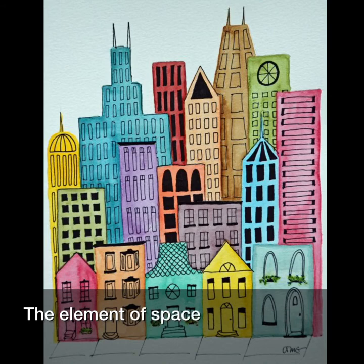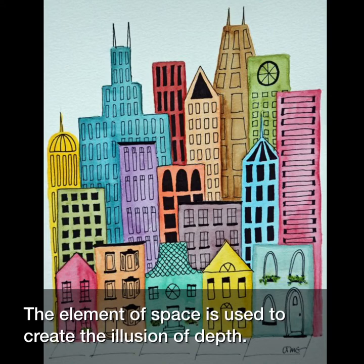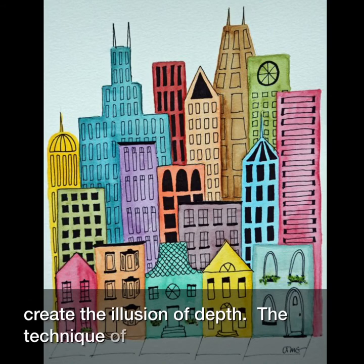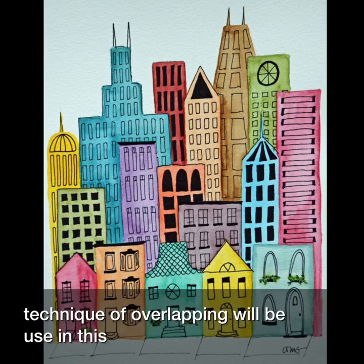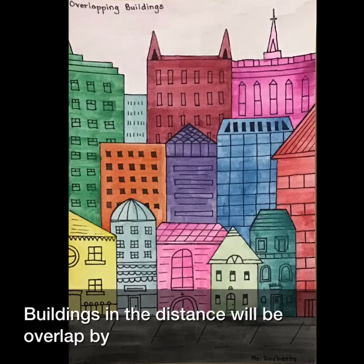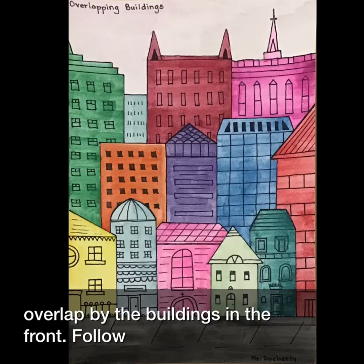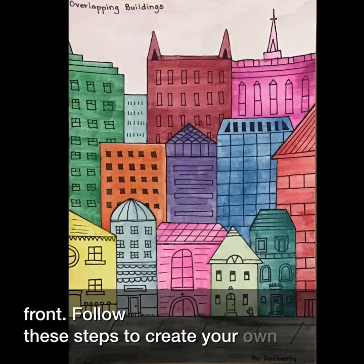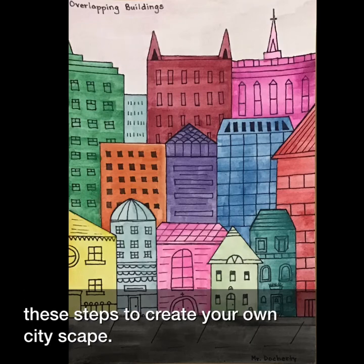The element of space is used to create the illusion of depth. The technique of overlapping will be used in this art tutorial. Buildings in the distance will be overlapped by the buildings in the front. Follow these steps to create your own cityscape.